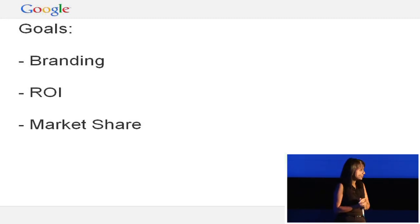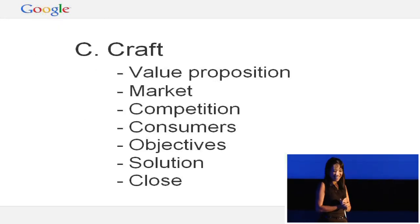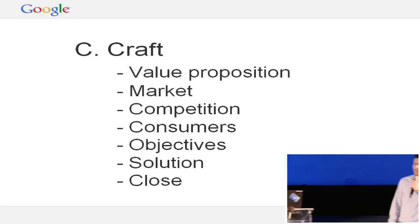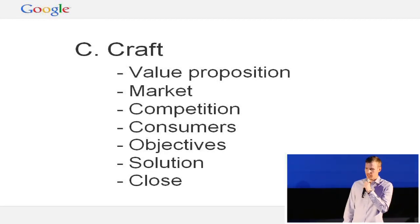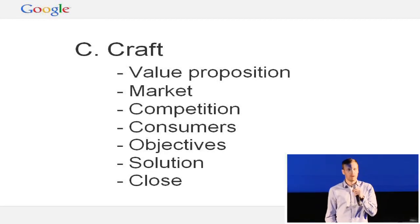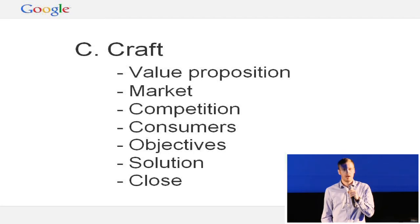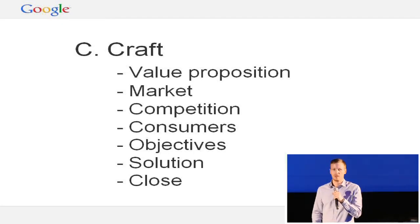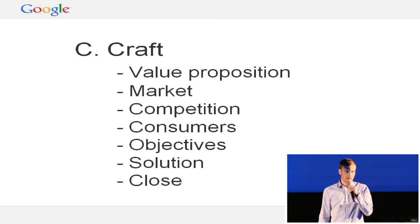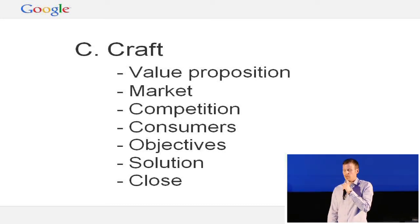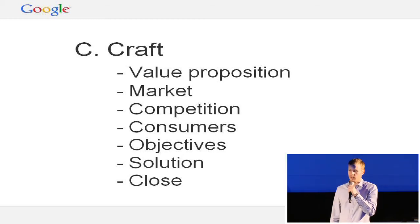The third C is craft — the actual meat and bulk of your pitch. You've built the relationship, you understand their goals — how do you put something compelling together? In Google, we always took the approach of what's called a seven-point framework. You begin with the value proposition: straight up, what are we offering you? What's the revenue impact our solution is going to have? What's the traffic we're going to drive? Whatever's appropriate — maybe it's an ROI goal, maybe we're going to bring your CPA down. The first thing is to grab their attention with the value proposition.